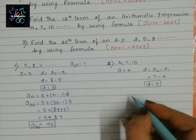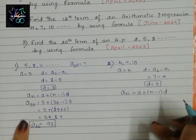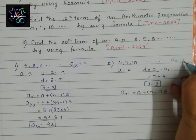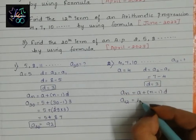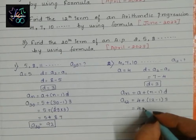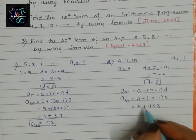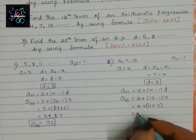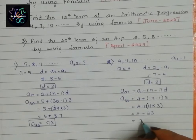Now let us calculate the 12th term. Using the formula A_N equals A plus (N minus 1) times D, we find A12 equals 4 plus (12 minus 1) times 3, which is 4 plus 11 times 3. 11 times 3 is 33, and 33 plus 4 is 37. So the 12th term is 37.